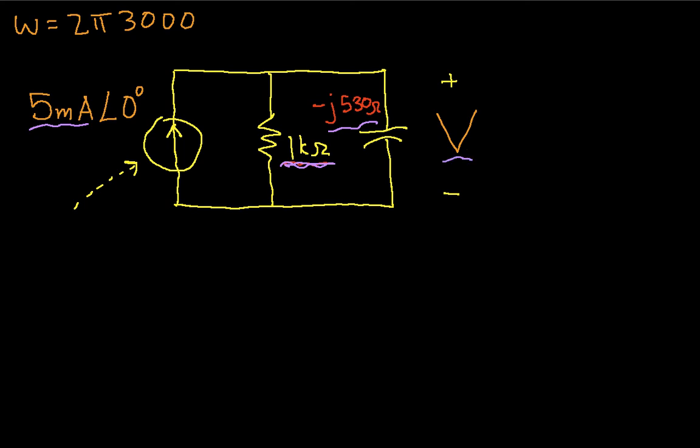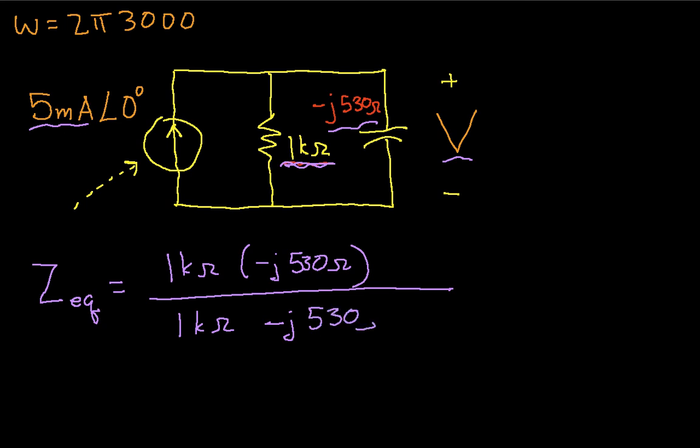So to get the equivalent impedance, I need to find the parallel combination of the 1k ohm resistor and the minus j 530 ohm impedance of the capacitor. So the equivalent impedance is going to be 1k ohm times minus j 530 ohms divided by 1k ohm minus j 530 ohms.